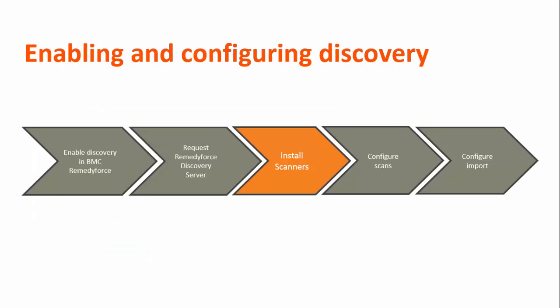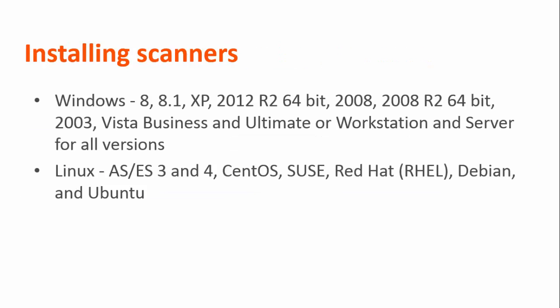The third procedure in the process is installing scanners. At this time, you must have identified devices that you want to configure as scanners. You might consider one device per subnet or per geography. Also consider the operating system requirements for a scanner. The scanner must be a Windows or Linux device with any of the listed operating system versions.